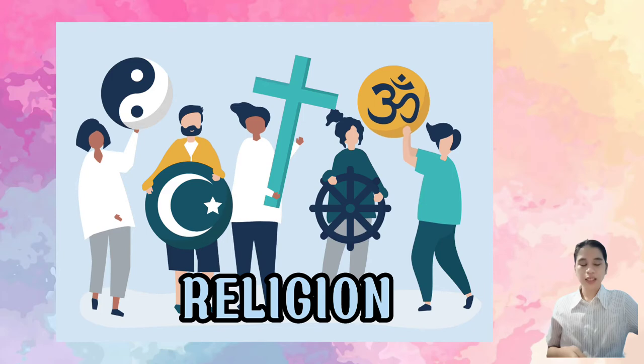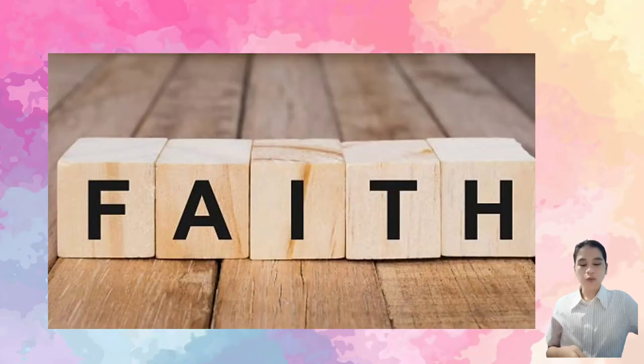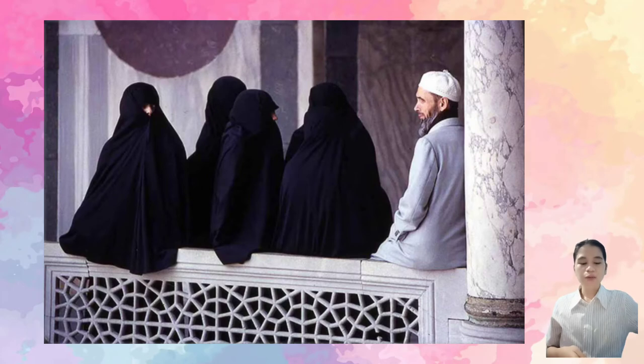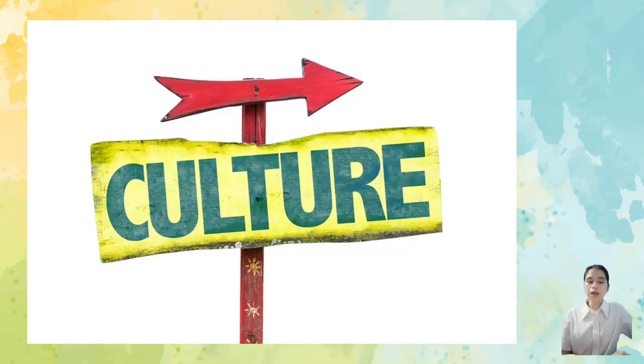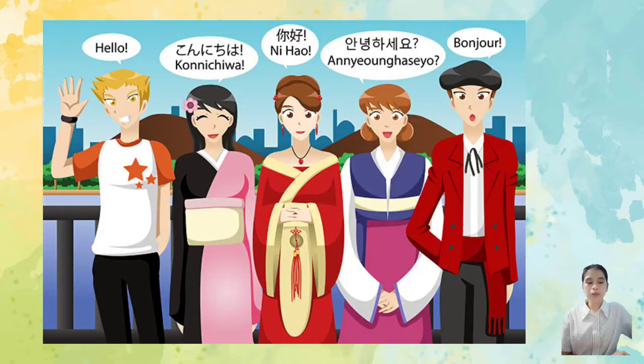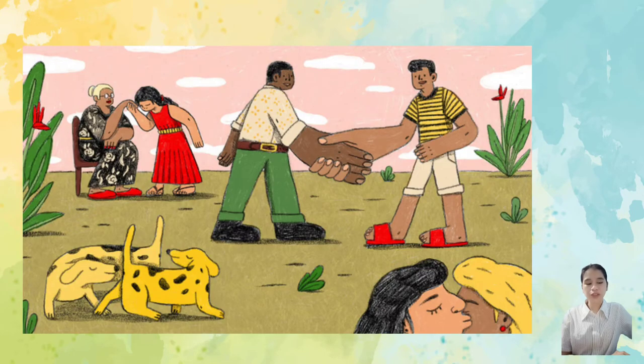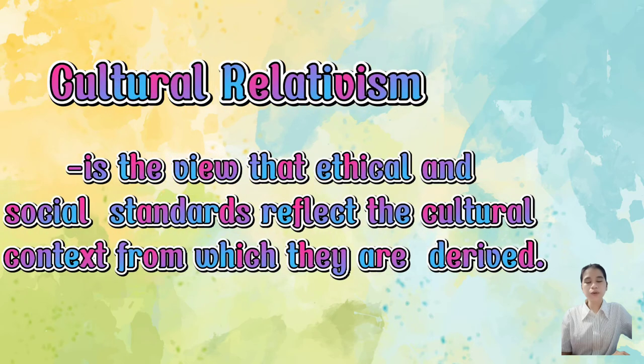Second is religion, as it is complex. We have different beliefs and faith that we follow. In Islam, having four wives is allowed, but in Christianity, it is not. Third is culture. We come from different communities and have different cultural practices that are unfamiliar to other cultures.